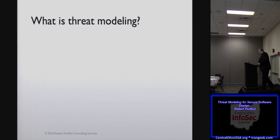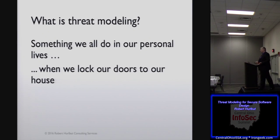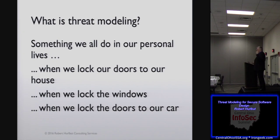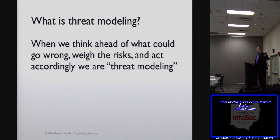Threat modeling is something we already do in our lives. Anytime we lock the doors to our house, or lock the windows, or lock the doors to our car — we're already thinking about these things. We're already thinking: potentially, if I leave my door open, somebody might come in and get my things; if I don't lock my car door, somebody might take my car, or if I leave things sitting in the car seat, somebody might see it and take it. So we already think about what could happen, what could go wrong, weigh the risks, and act accordingly.